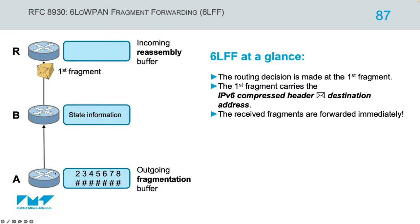Essentially, node A sends the first fragment containing the source and destination IPv6 addresses. When node B receives this first fragment, instead of waiting for all fragments to do reassembly and then re-fragment before forwarding to the next hop, node B checks the IPv6 header, keeps some state information, and immediately forwards the fragment to the next hop — saving the 60-second reassembly timer wait.